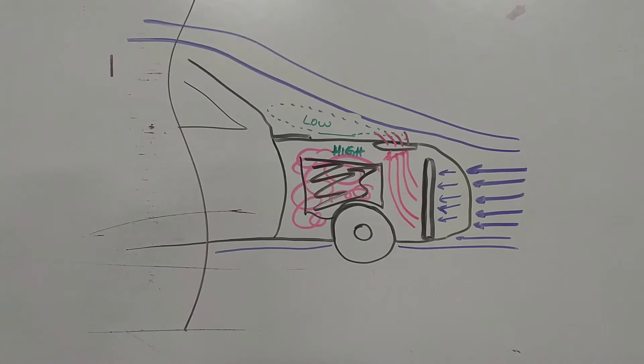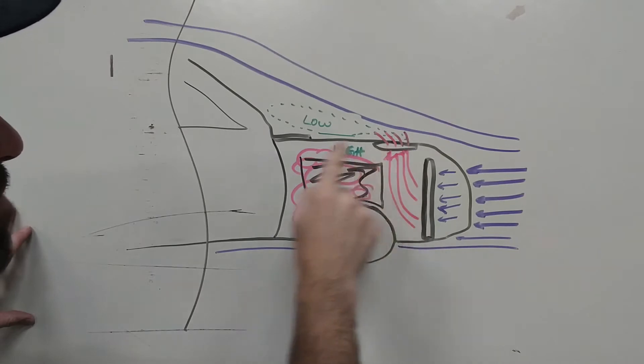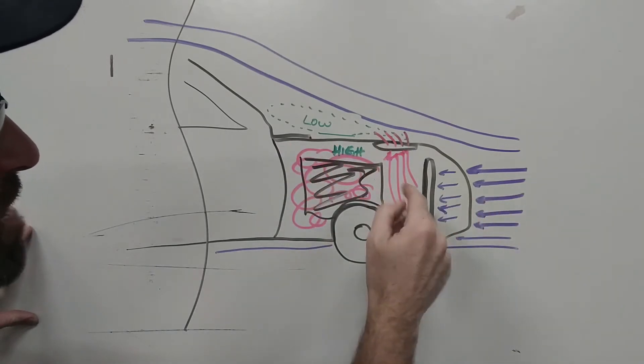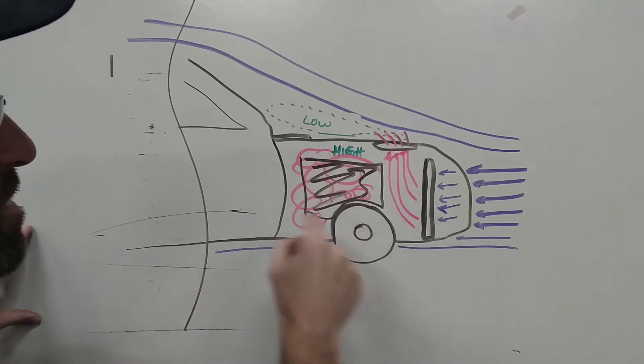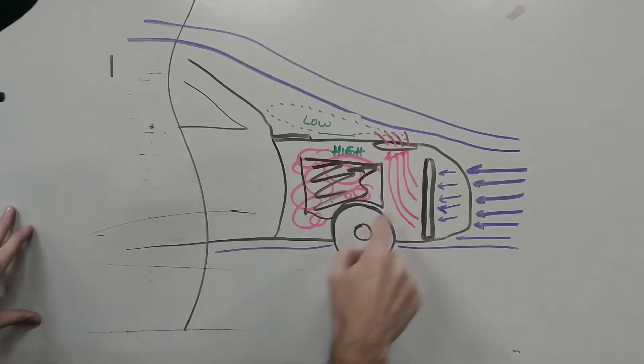Alright, so here is a basic simple display of a vehicle. You've got cold air that comes in through the radiator and comes into the engine bay. Normally without a hood louver, the cold air comes into the radiator, turns into hot air, and it just gets stuck here in the engine bay.